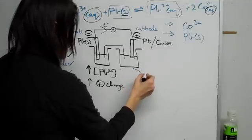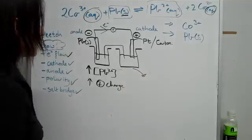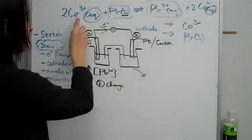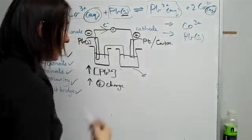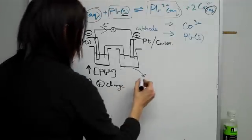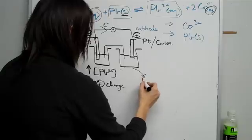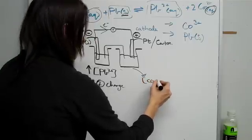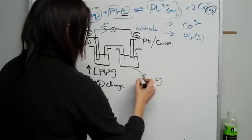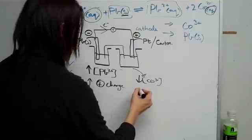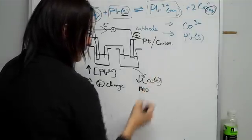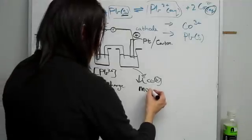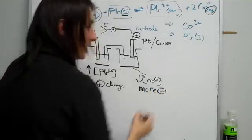In this one here, you'll find that you're going to actually use up the cobalt and produce cobalt with a plus two charge. So basically, the concentration of cobalt in that half cell is going to decrease. And so you've actually got a more negative. Because you're decreasing the amount of positivity you have, you're going more negative.